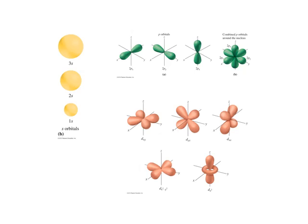Within any shell there's only one s orbital. In the second shell we start seeing p electrons, and there are three arrangements of p electrons. Each orbital can hold two electrons — so the 2s holds two, and each of the px, py, and pz orbitals holds two. The d orbitals also hold two electrons each in a more exotic shape, so a total of 10 electrons can go into the d subshell.